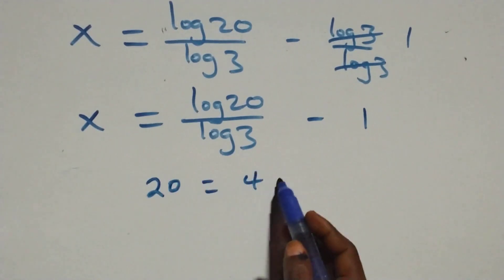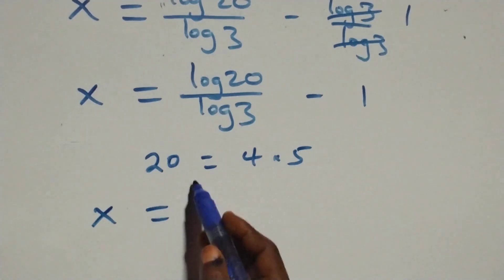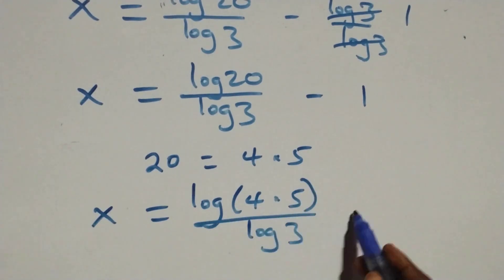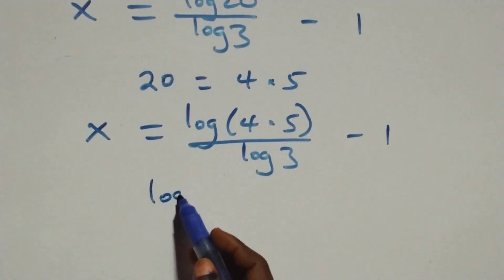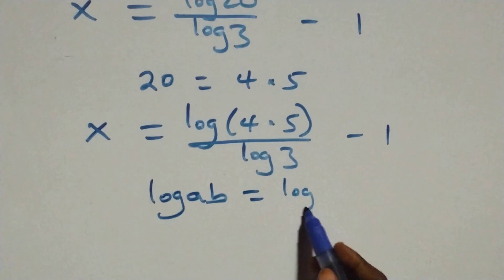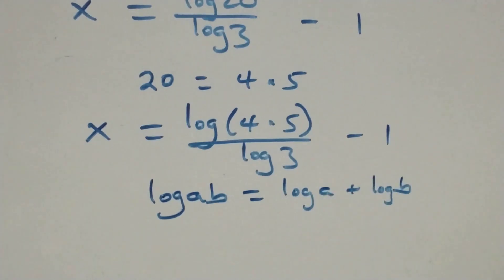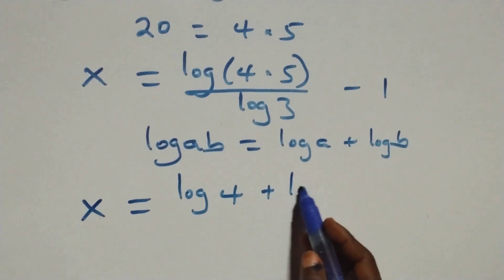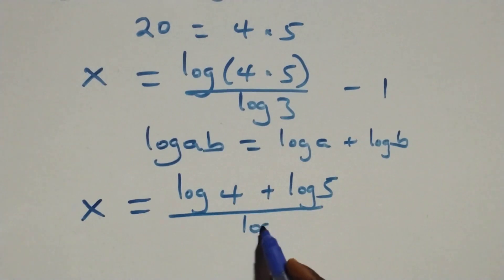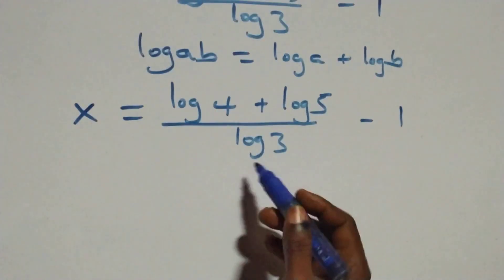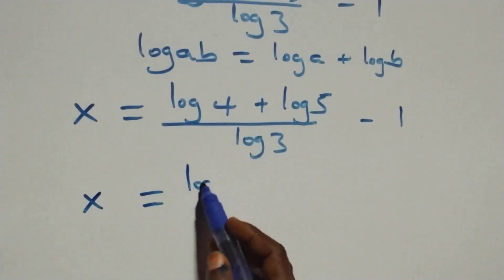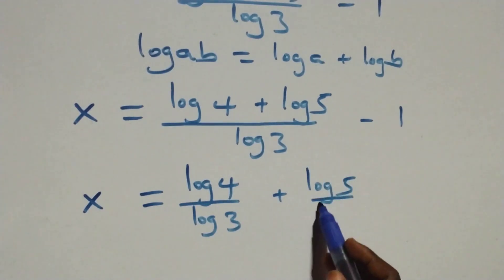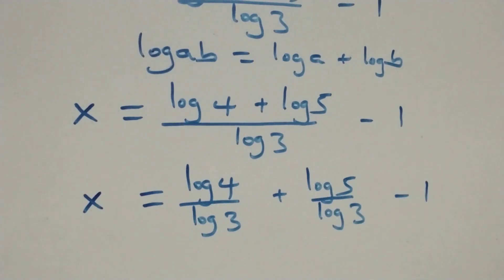That is, x equals to log 20 over log 3 minus 1. We can re-express 20 as 4 times 5. What we have becomes x equals to log(4 times 5) over log 3 minus 1. This follows the law of logarithm: log a times b equals log a plus log b. So x equals to log 4 plus log 5, over log 3 minus 1. We separate this into two fractions: x equals to log 4 over log 3 plus log 5 over log 3 minus 1.